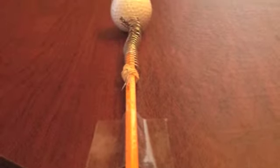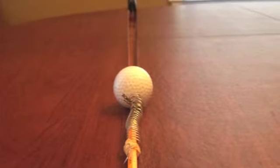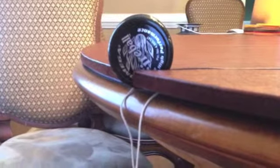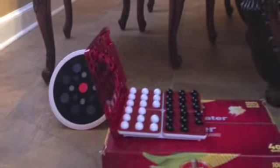As you can see here, this is the pencil with the spring attached and the golf ball, which has a straight line of path down to the yo-yo. There's the yo-yo, and here is the marble case.